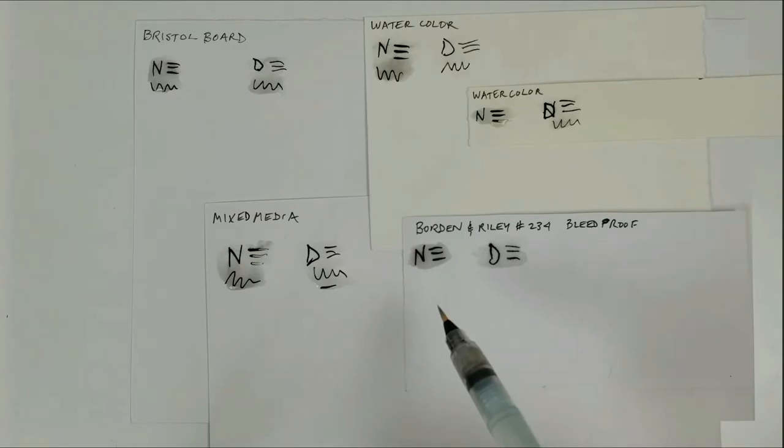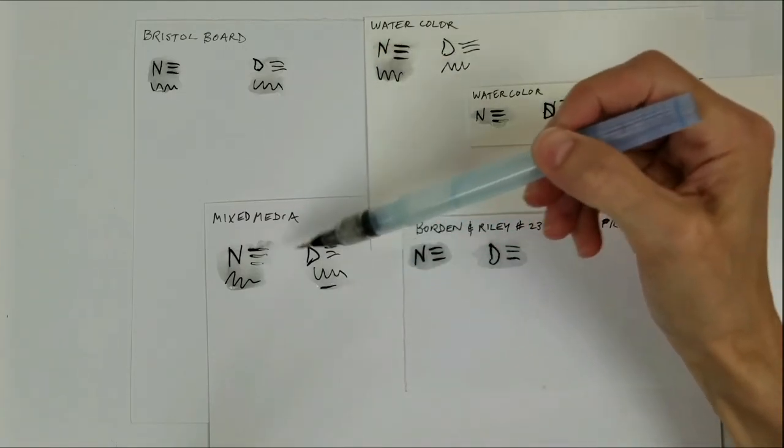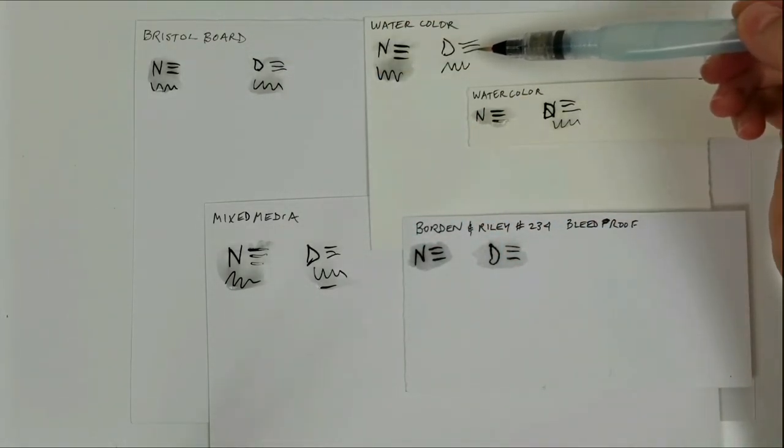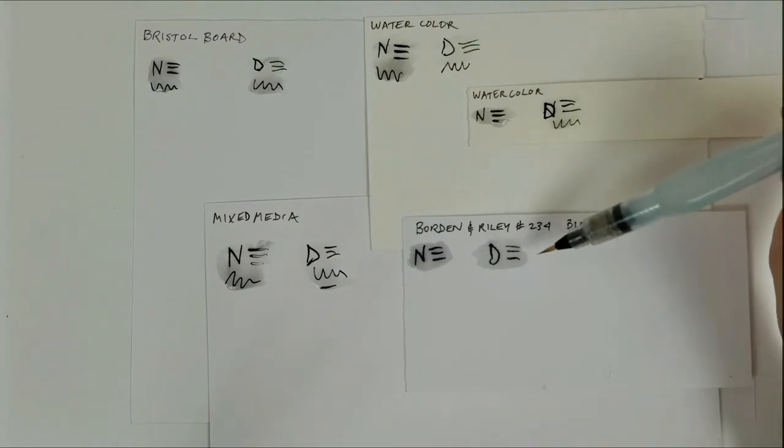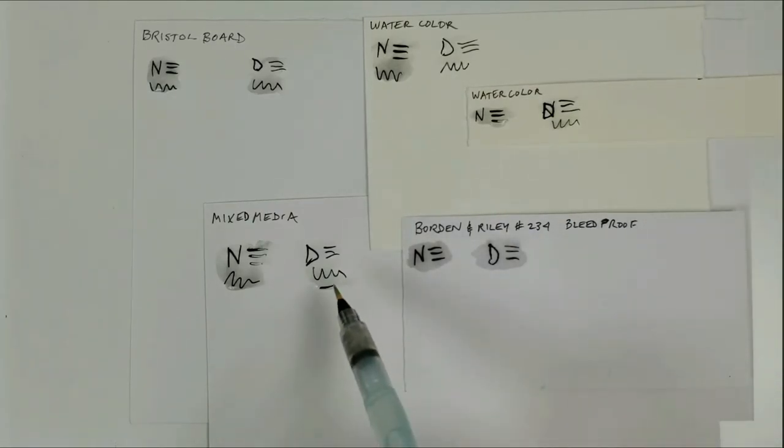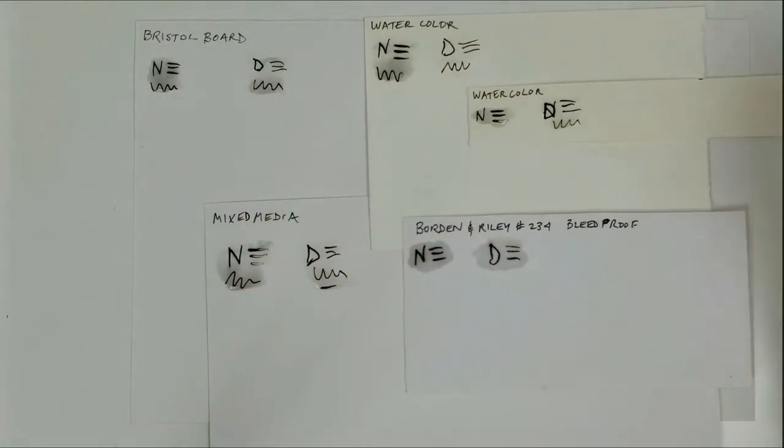So I think you can see for most of the papers, the De Atramentis, I mean, the paper is actually wet, so it is showing a little bit of pigmentation, but this watercolor paper does much better with the De Atramentis, the Borden and Riley bleed proof paper does much better. It doesn't bleed with the De Atramentis ink. The mixed media also does better with the De Atramentis. Bristol board might be about the same, but I still think this might bleed a little more. Let's see. I'm kind of going back over. So that's the reason why I prefer to use the De Atramentis ink.